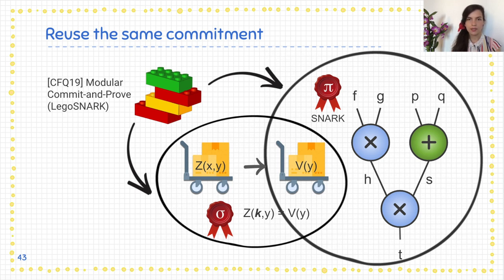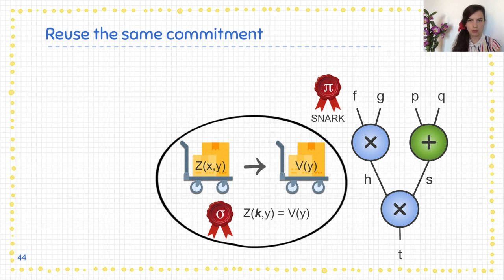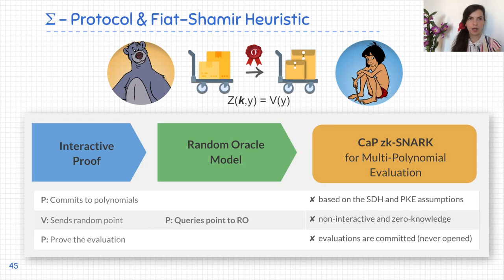For more details on the proof sigma — which shows a partial evaluation of a bivariate polynomial at a random point k — we use sigma protocols and the Fiat-Shamir heuristic to make it non-interactive. We start with an interactive proof that commits to the polynomial and proves the evaluation at a point, and with a random oracle we get a non-interactive protocol. Our commitments are based on the Strong Diffie-Hellman assumption and the Power of Knowledge of Exponent assumption. We obtain zero knowledge because we never open the commitments — unlike other polynomial commitment schemes in the literature, we never open an evaluation of the polynomial; instead, we show that a committed polynomial is a bivariate polynomial.